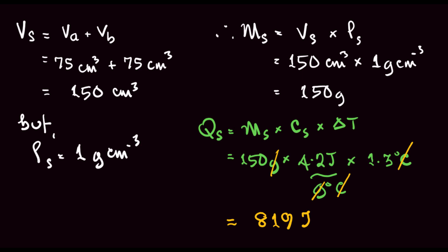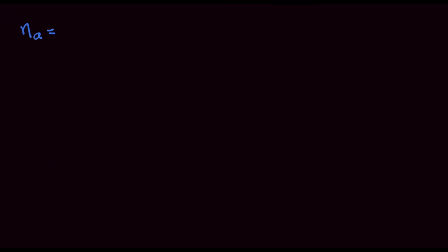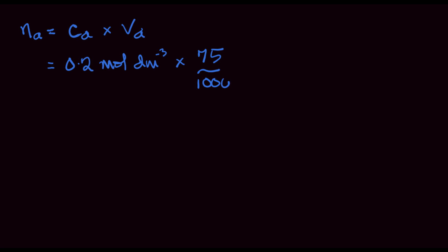The heat released was used to raise the temperature of the solution. For concentration in moles per dm³ and volume in dm³, we calculate the number of moles of the acid as: concentration of acid times volume of acid — that is 0.2 moles per dm³ times 75 cm³ divided by 1000, giving us 0.015 moles.